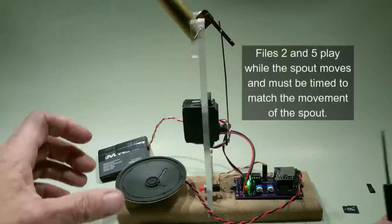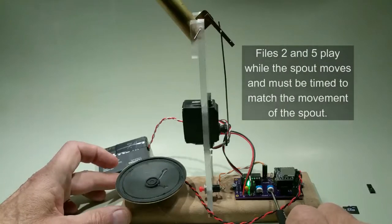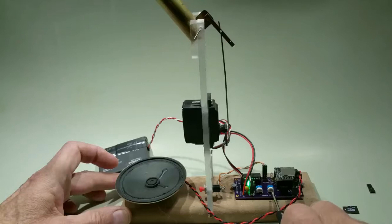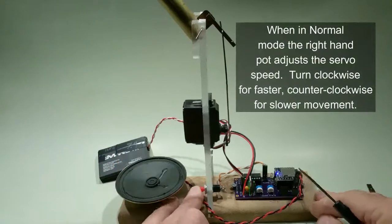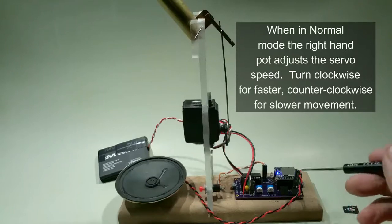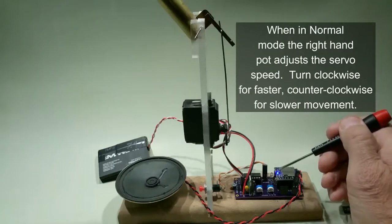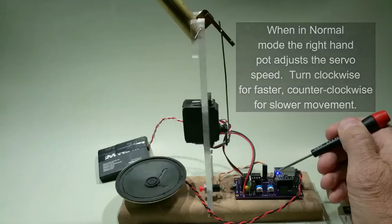The exception to that is files number two and five. I'm going to slow this down. You may have noticed that they were truncated a bit. If I press the button again, here comes the train. And again, it's fairly long. The little blue LED on the MP3 player shows that that file's playing.